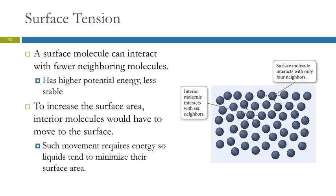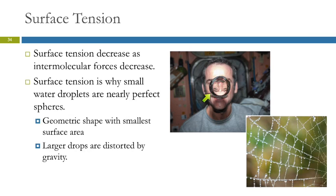We want low potential energy. Back to this picture taken in outer space of this big drop of water — it forms a sphere because that minimizes the surface area and maximizes the interactions inside, giving lower potential energy than if it were spread out. We can see this on our planet in tiny droplets of water small enough not to be significantly affected by gravity — beautiful little spheres, the geometric shape with the smallest surface area.